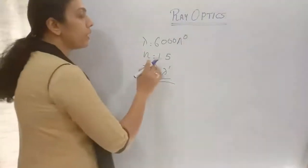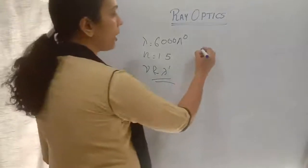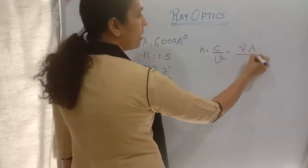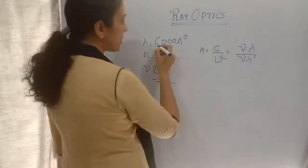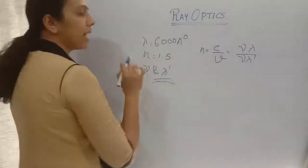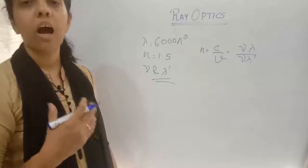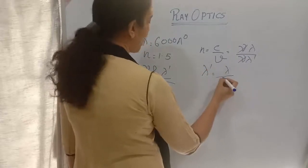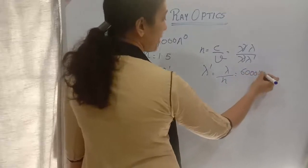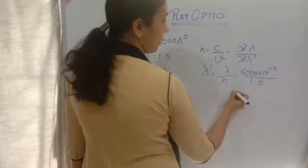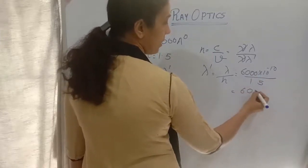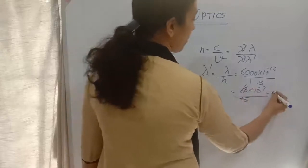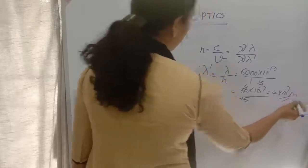The relation connecting n and λ: we know n = C/V, and C = νλ = ν'λ'. So refractive index n = λ/λ', from which ν and ν' cancel, giving λ' = λ/n. So λ' = 6000 × 10⁻¹⁰ divided by 1.5, which gives 4 × 10⁻⁷ meters as the wavelength.